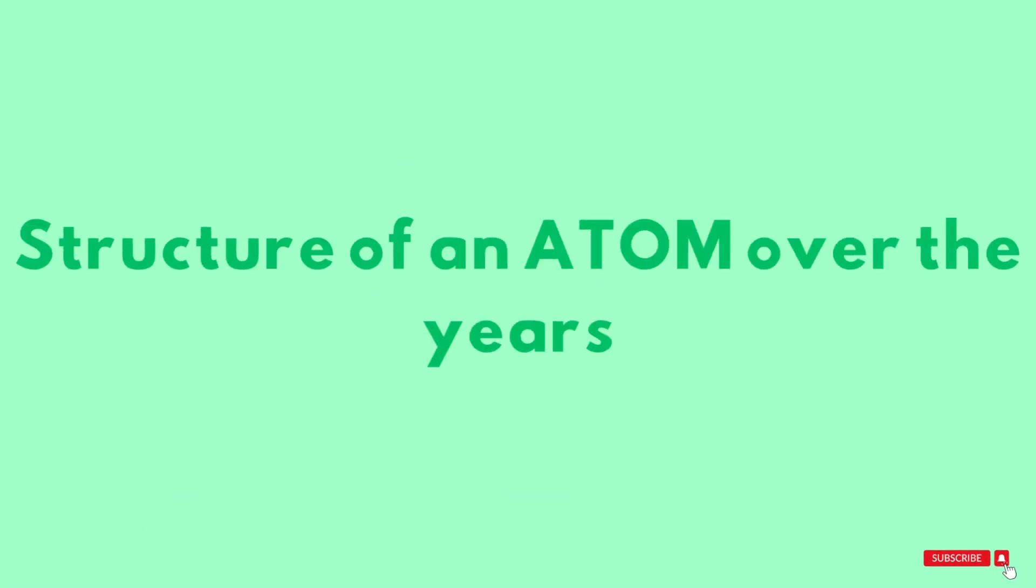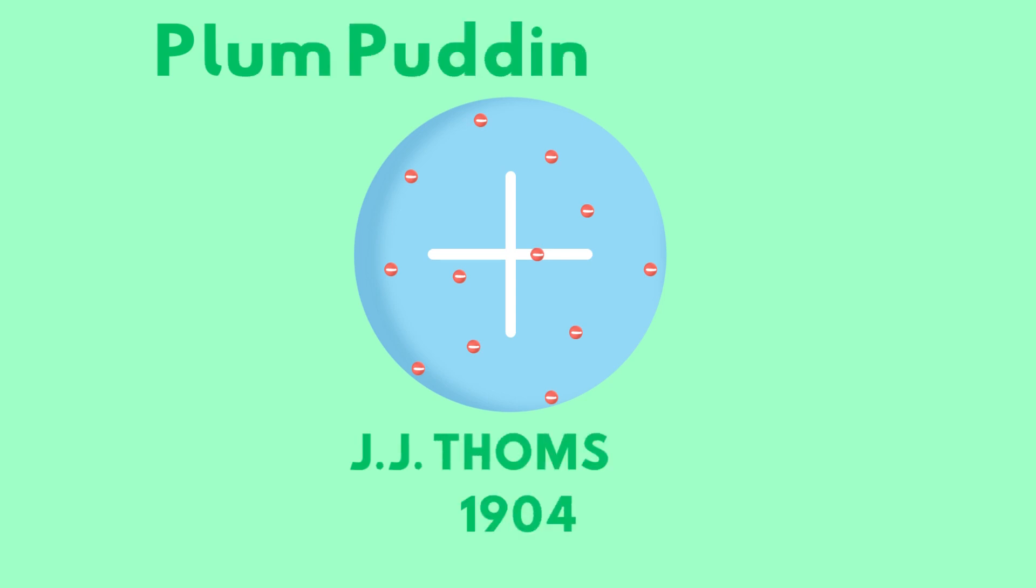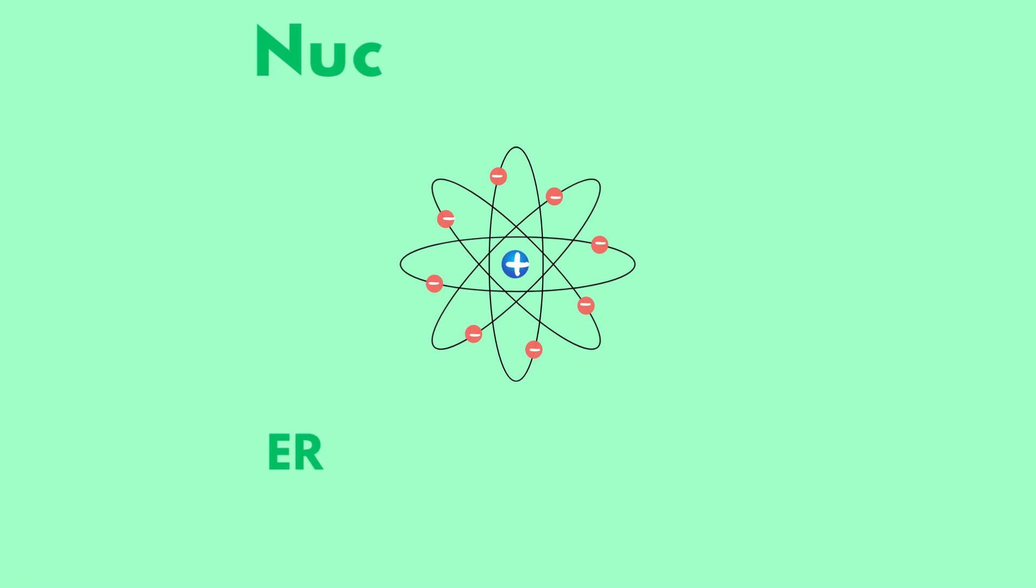Structure of an atom over the years: The solid sphere model was found by John Dalton in 1803. The plum pudding model was found by J.J. Thomson in 1904. The nuclear model was found by Ernest Rutherford in 1911.